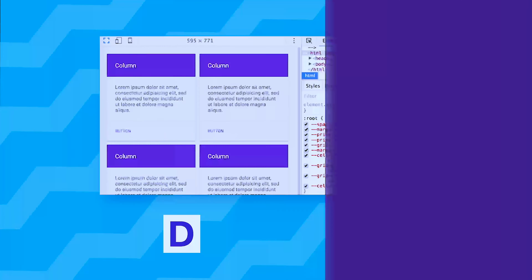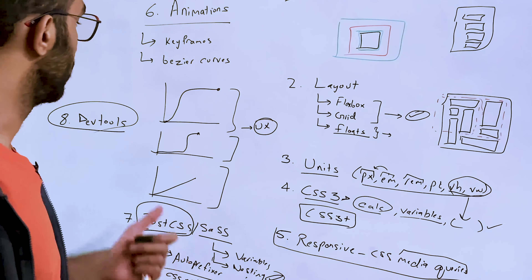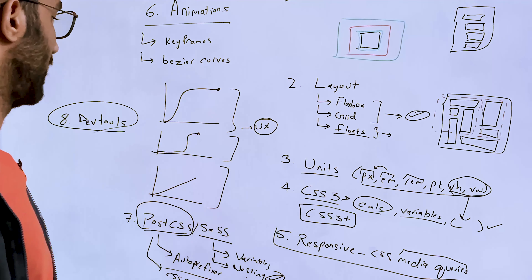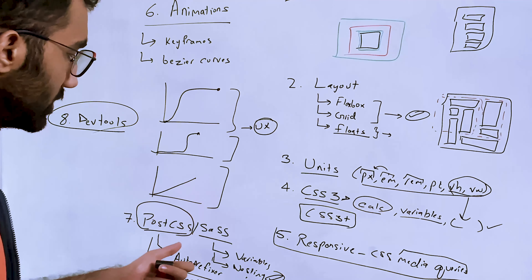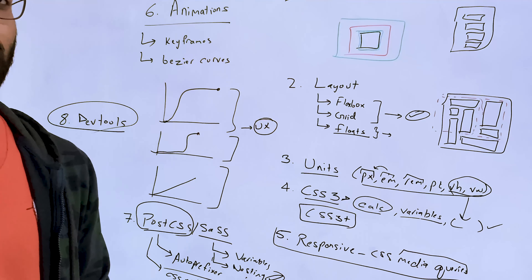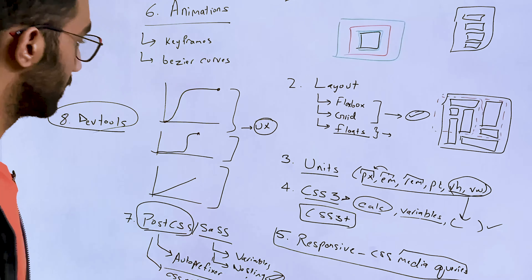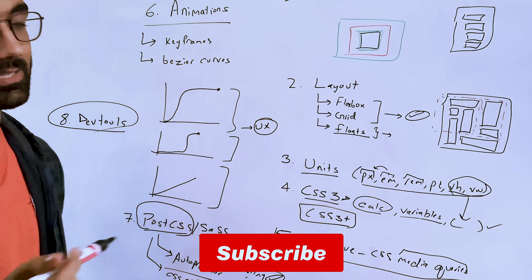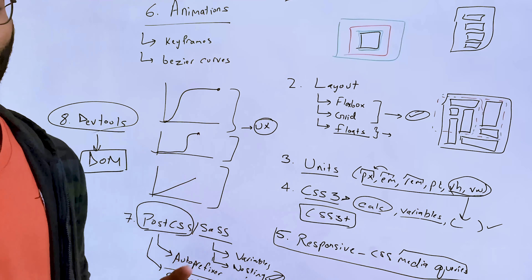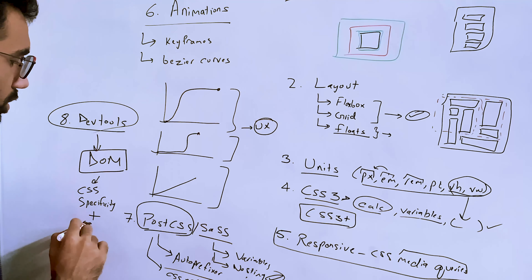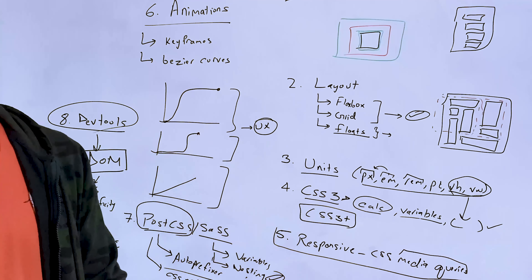The eighth and final CSS point is knowing your way around DevTools. DevTools is a game changer and you have to learn them as a front-end developer. Knowing how to navigate CSS in DevTools is especially important because CSS — like HTML — does not complain when something isn't working. You have to inspect the DOM directly to see what's really happening. Knowing about DOM nodes, CSS specificity, how CSS works, and how to manipulate and debug CSS directly from your browser is a must for anyone who wants to master CSS.